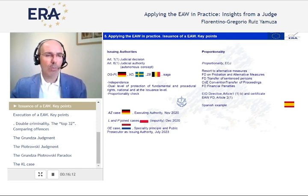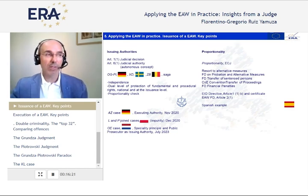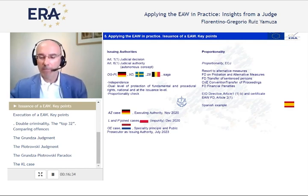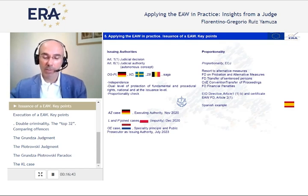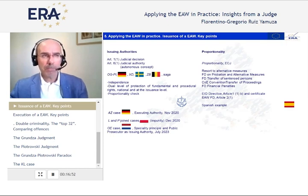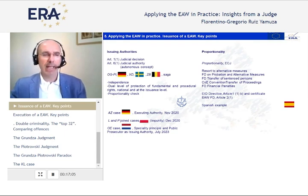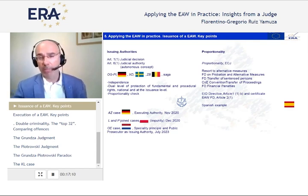The court has decided — regarding prosecutors from Germany, Sweden, the Netherlands, and others — whether they satisfy the independence criteria. The key points are: the judicial authority, an autonomous concept of EU law, has to be independent, has to ensure a dual level of protection, has to ensure the proportionality check, and most importantly, has to be fully independent from the executive. The latest decision at court is the OE case, which has to do with the specialty principle and the public prosecutor as the issuing authority — where the first EAW was issued by a prosecutor in the Netherlands, and the court later said prosecutors weren't entitled to issue such an order.